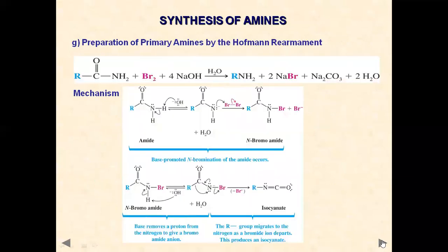Amines can also be synthesized by Hofmann rearrangement. In this rearrangement, an unsubstituted amide is converted to a primary amine with formal loss of one carbon as CO2. This rearrangement is also known as Hofmann degradation.